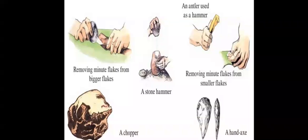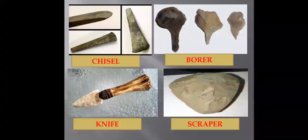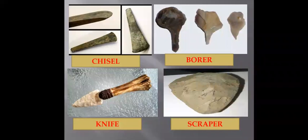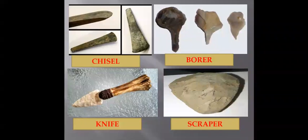Homo sapiens made various implements like the knife — as you can see in the picture. They also made scrapers, borers, and chisels from long blades. He also began to use ivory and rare stones of the quartz variety for making tools and other articles.